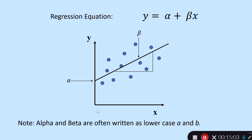Alpha and beta are often also written as lowercase a and lowercase b — it means the same thing. Alpha is the intercept: the value of y when x is zero. Beta is the slope of the line, calculated by how much the line goes up on the y-axis for every unit it goes up on the x-axis.